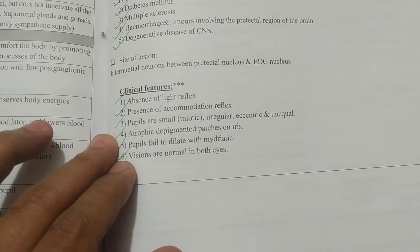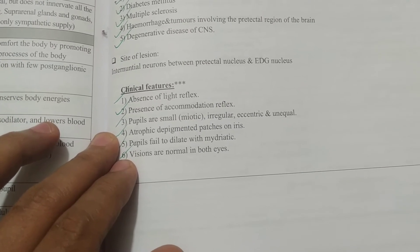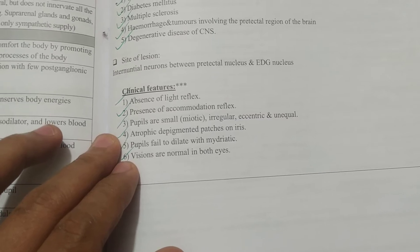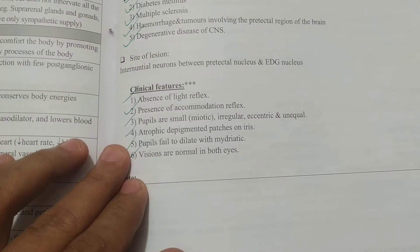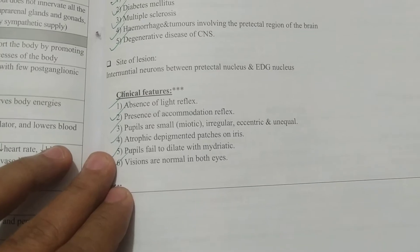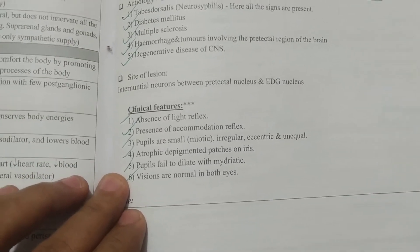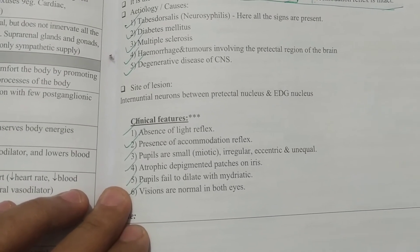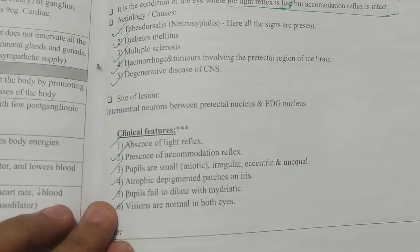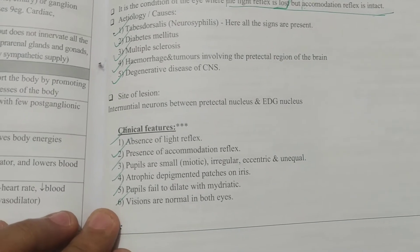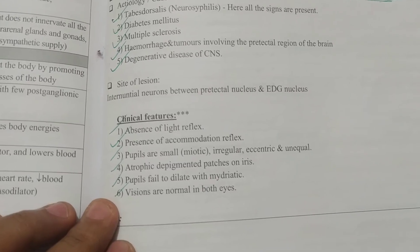Pupils are small and irregular, unequal, with atrophic depigmented patches on the iris. Pupils fail to dilate. Vision is normal in both eyes.